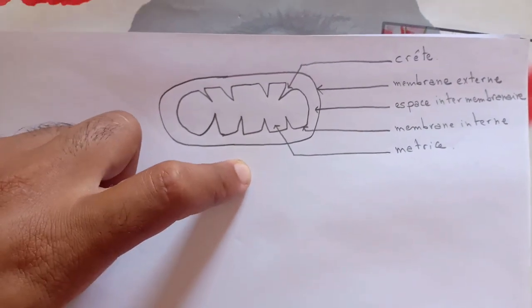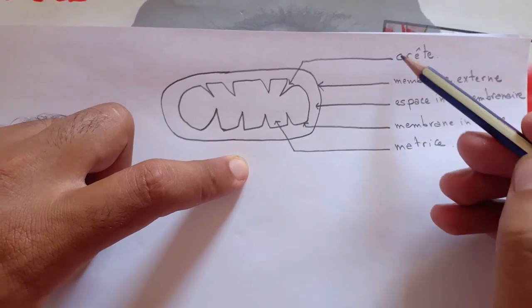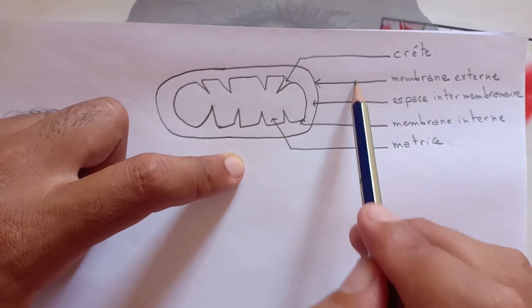Voilà. Comme vous pouvez le remarquer, toutes les terminaisons des flèches sont situées sur le même niveau. Les lignes sont linéaires et parallèles.